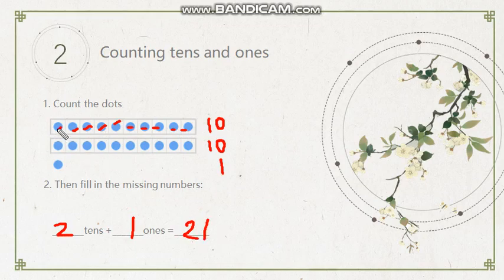But of course, you can do the old way by just counting. One, two, three, four, five, six, seven, eight, nine, ten. Eleven, twelve, thirteen, fourteen, fifteen, sixteen, seventeen, eighteen, nineteen, twenty, and twenty-one. But in this way, you'll be faster and easier.